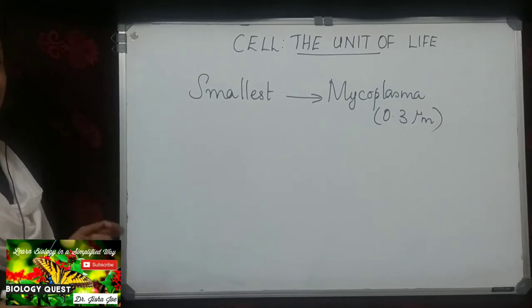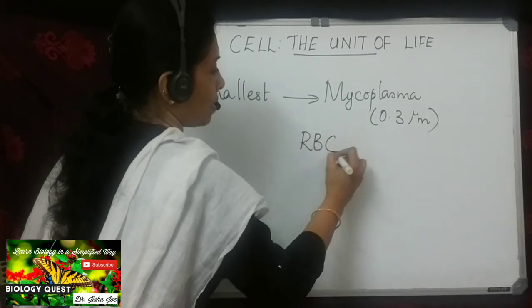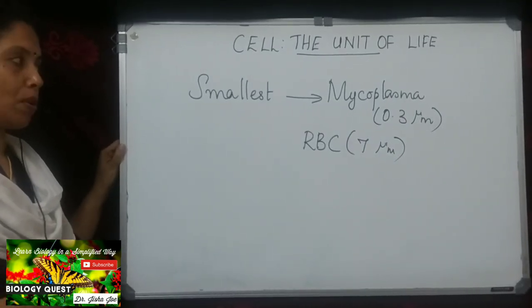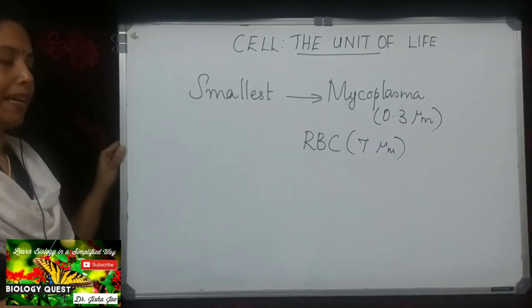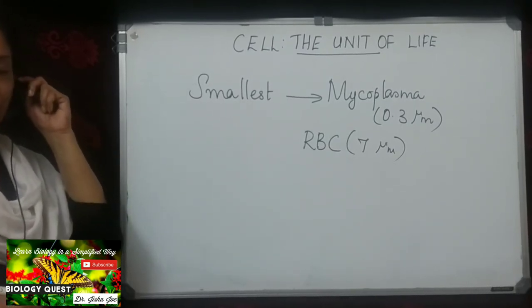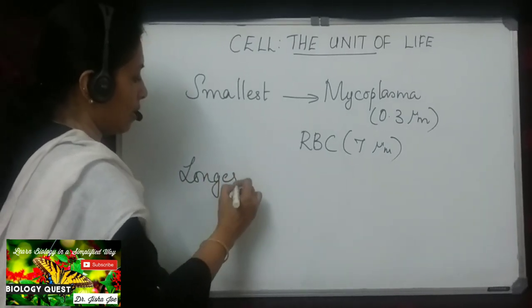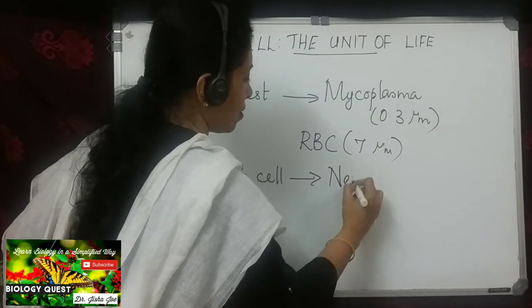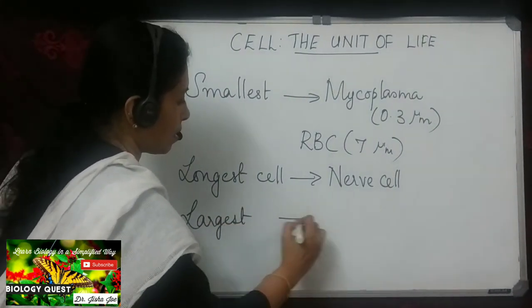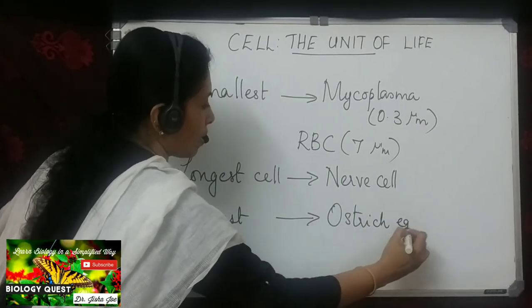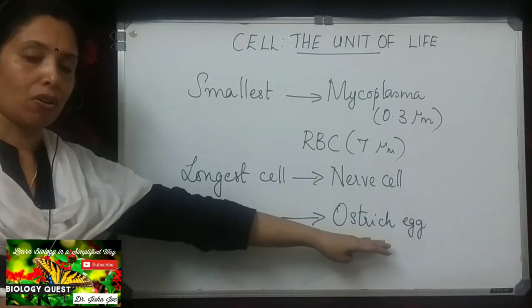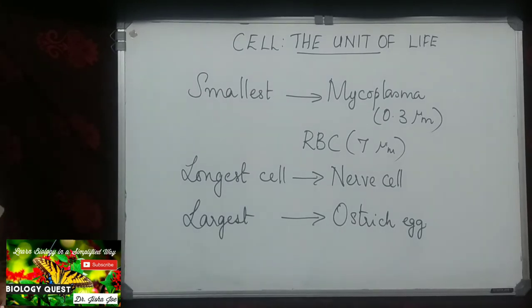The smallest cell in the human body is the RBC, which is about 7 micrometers in diameter. The longest cell is the nerve cell. The largest cell is the ostrich egg. So cells differ in their size: the smallest is mycoplasma, the largest is the ostrich egg, and the longest is the nerve cell or neuron.